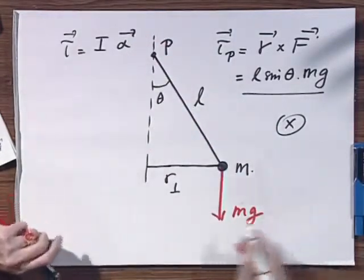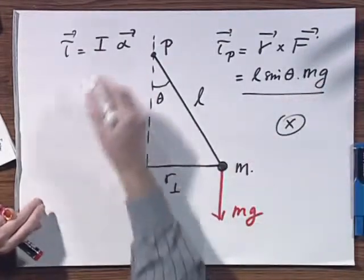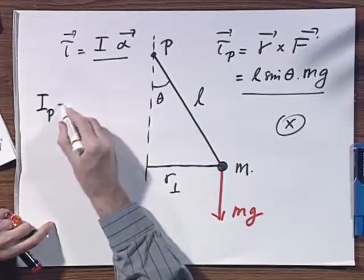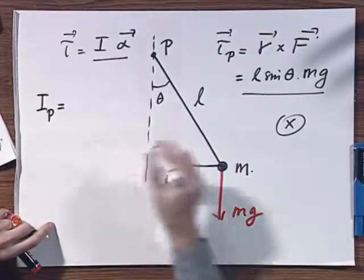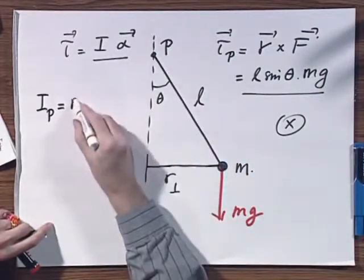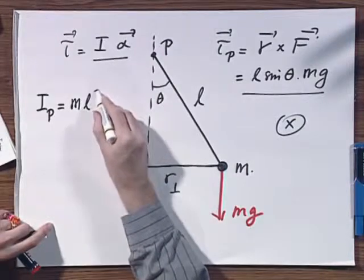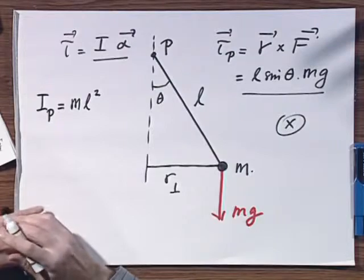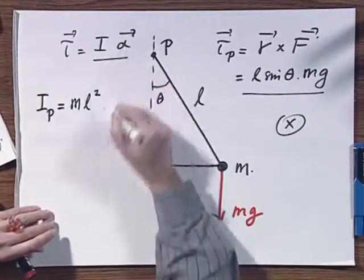Now, this torque also equals Iα. And I relative to point P is totally trivial. That is ML². That's the definition of moment of inertia. And alpha is θ double dot.